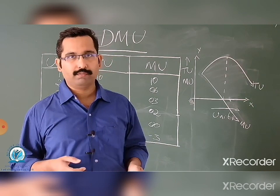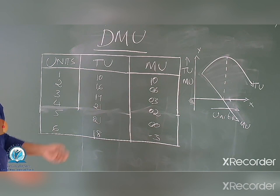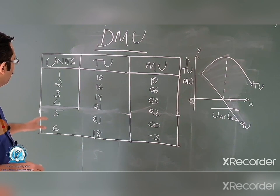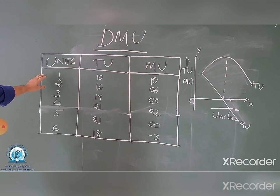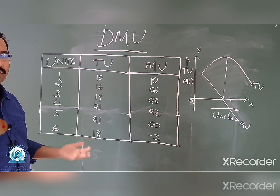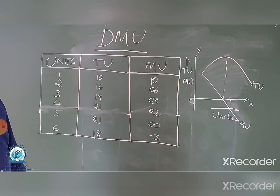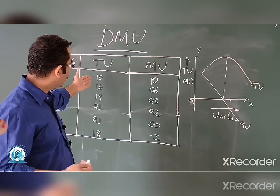Let's try to understand this law. I have already drawn a table. Let's see how this table works and what the components are. In the first column, I have considered the units — I am increasing the consumption from the first unit up to the sixth unit, so I have consumed six units of a given commodity.